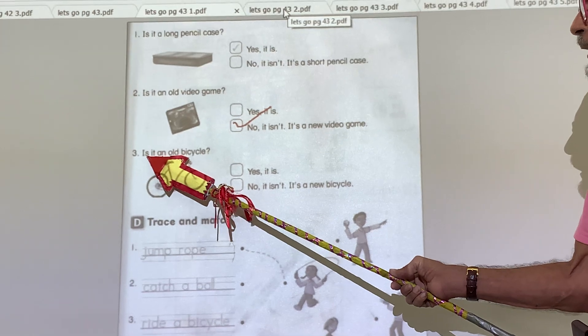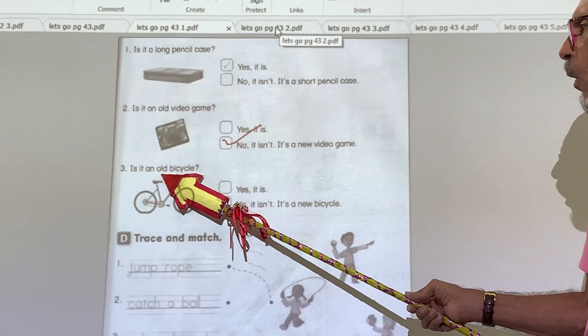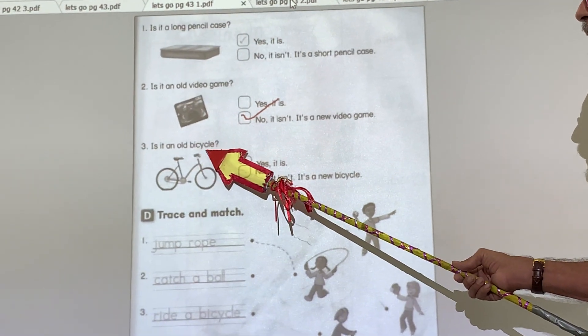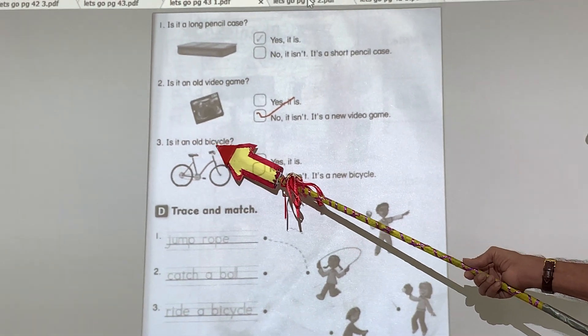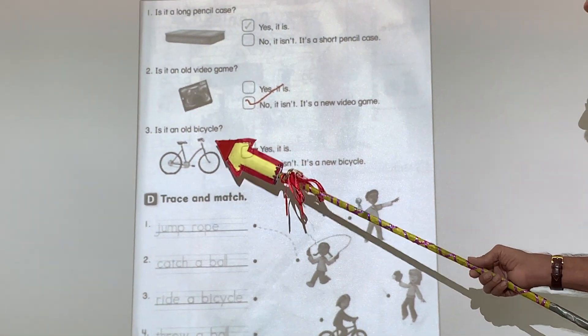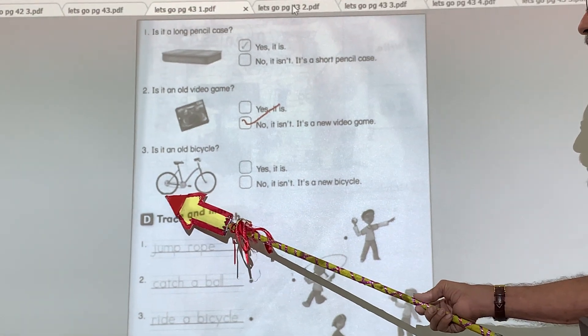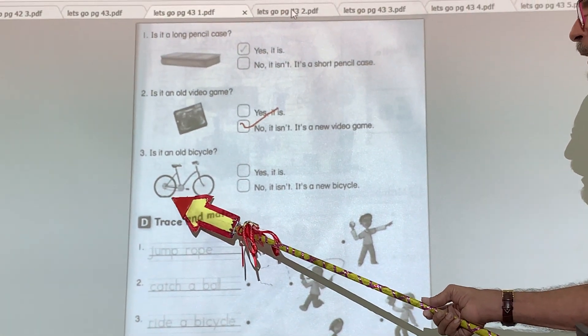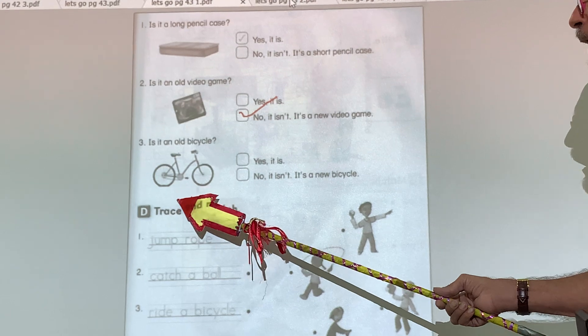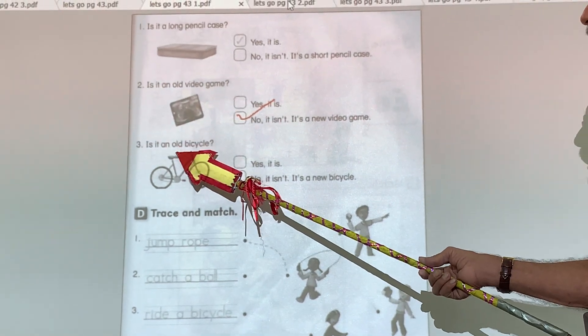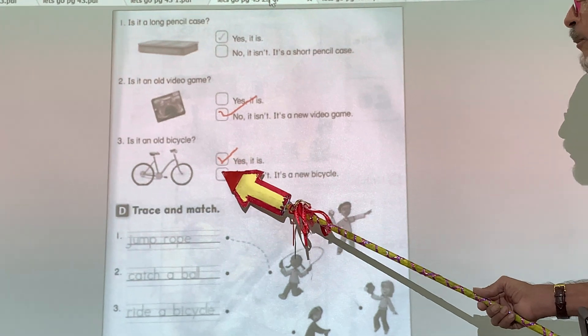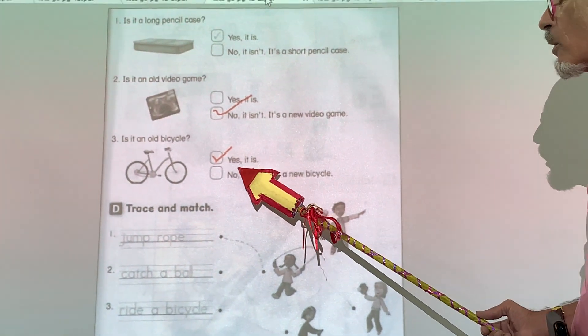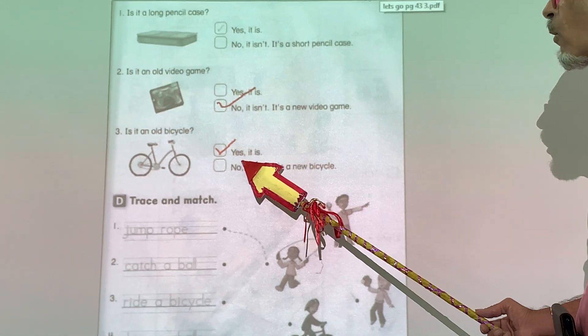Okay? Look at number three. Is it an old bicycle? Is it an old bicycle? Look at the tire. Looks kind of flat to me. Is it old or new? It's an old bicycle. Yes, it is old. Yes, it is old.